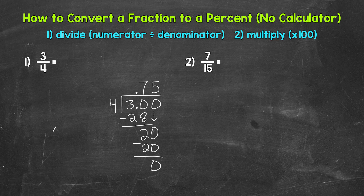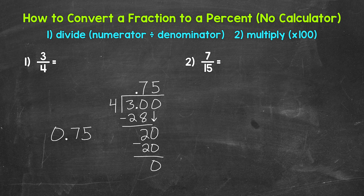0.75. So I'm going to come to the side here and rewrite our decimal. I'm starting with a zero and then a decimal — this is typical when writing decimals because it's going to help us recognize and see the decimal. So 0.75. 3 fourths in decimal form is 0.75.